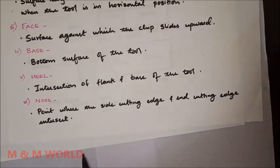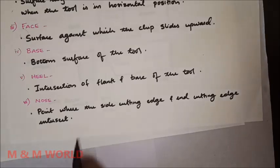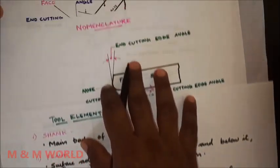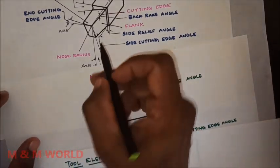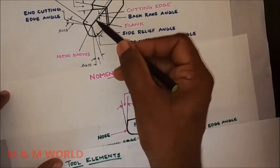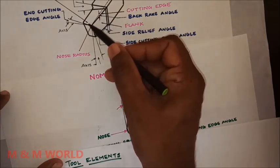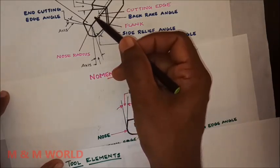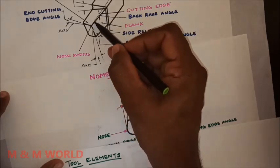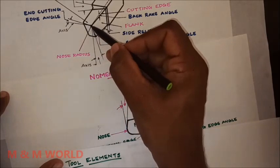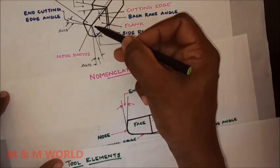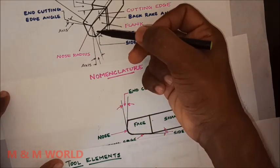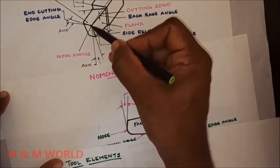The next element is the nose. The nose is the point where the side cutting edge and the end cutting edge intersect. The cutting edge is the edge on the face of the tool — it has a side cutting edge and an end cutting edge, and the nose is their point of intersection.